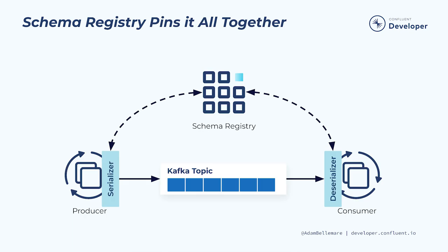To pin this all together, we rely on the schema registry to streamline event stream usage. The Confluent schema registry provides a common point of reference for both the producer and consumer of an event. Producers rely on the schema registry during data serialization to ensure that the schema they're using matches the expected schema for the Kafka topic. If the schema disagrees with the data being serialized, it will throw an exception, preventing any malformed data from entering the Kafka topic. Consumers rely on the schema registry to obtain a copy of the schema to deserialize the binary data back into a usable format. The schema registry plays a very important role in event-driven architectures and is essential for ensuring that both the producer and consumer of an event have a common understanding.